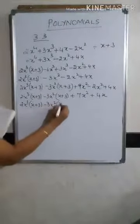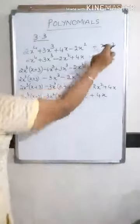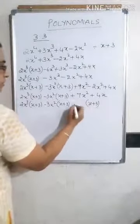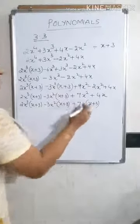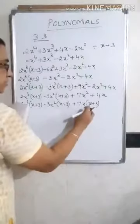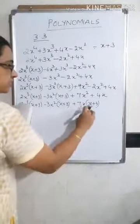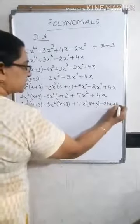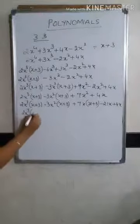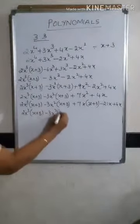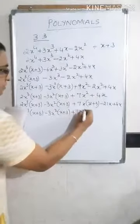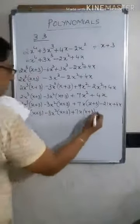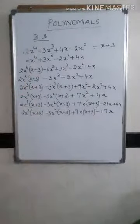Now express 7x² in terms of x plus 3. Multiply x plus 3 by 7x: 7x times x gives 7x², but the extra term is 7x times 3 which is 21x. Since it's positive, write minus 21x. Then minus 21x plus 4x gives minus 17x. Repeat the previous x plus 3 groups as they are and carry minus 17x to the next step.